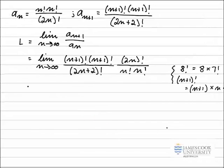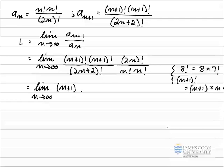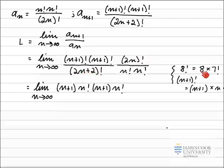Using that rule in our expression, the limit now becomes — we still write the limit as n approaches infinity — the first n plus 1 factorial written as n plus 1 multiplied by n factorial, and the second n plus 1 factorial written as n plus 1 times n factorial. The 2n factorial on the top will cancel with terms on the bottom line, and the 2n factorial in brackets is still present on the top.